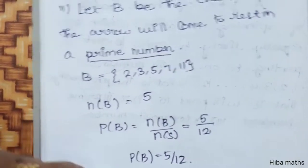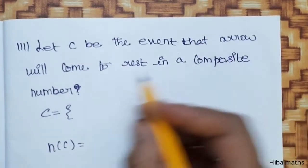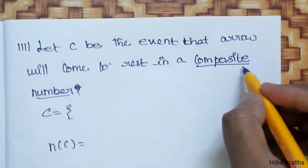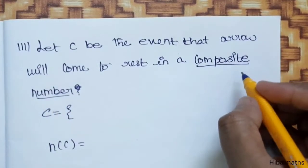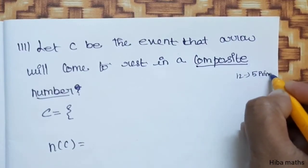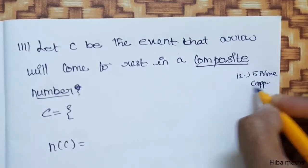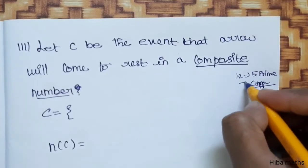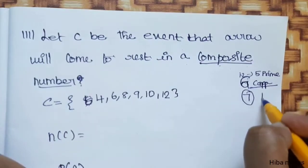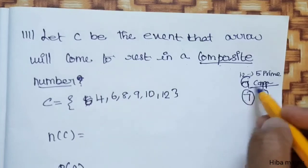Third subdivision: let C be the event that the arrow will come to rest on a composite number. A composite number is the opposite of a prime number. If we have 12 numbers total and 5 are prime numbers, the remaining numbers are composite numbers. 12 minus 5 gives us 7, but 1 is neither prime nor composite, so we have 6 composite numbers.